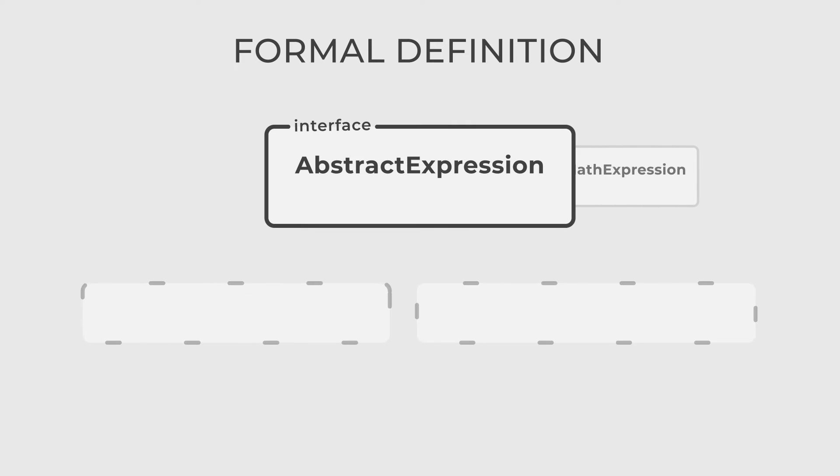There are three actors in this design pattern. The first, abstract expression, or math expression in our case, is an interface that declares an interpret method used by concrete expressions to interpret the input. In our example, interpret is calculate.